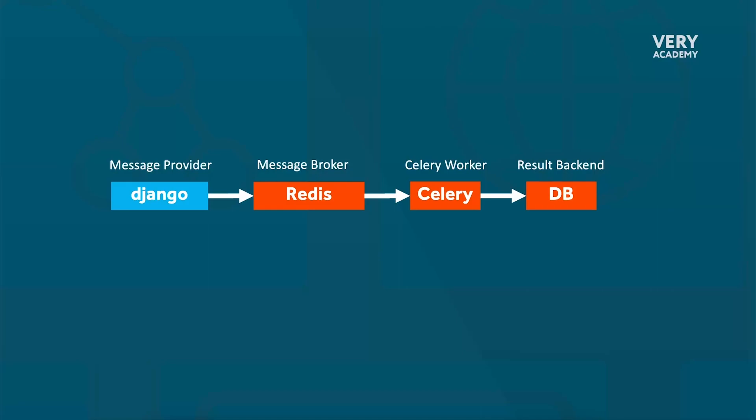Celery is going to pick up these tasks and process them. Sometimes the task producers will also determine the logic and the conditions under which the task should be triggered. So they can be triggered by user actions, such as submitting forms, or by events within the application, such as a new user registration. Once triggered, the task producer — our Django application code — creates a new task object with the necessary data and parameters and then sends it to the broker.